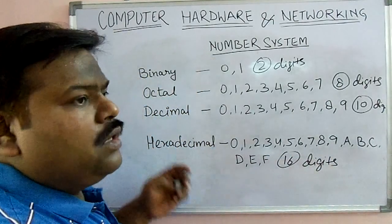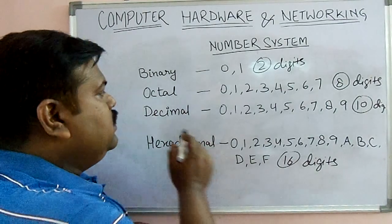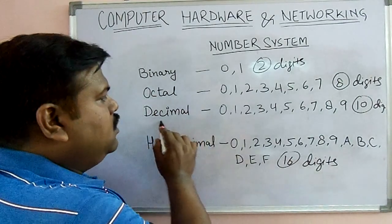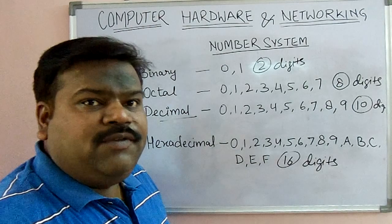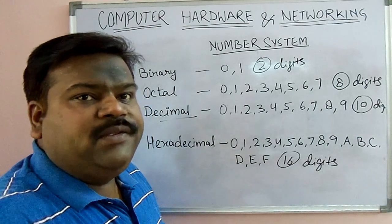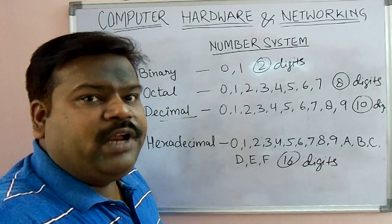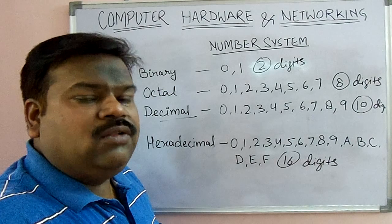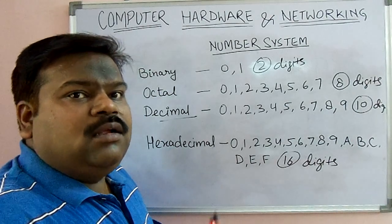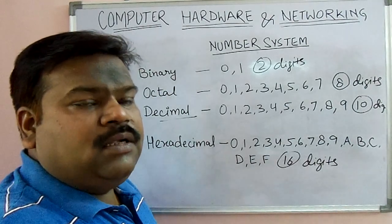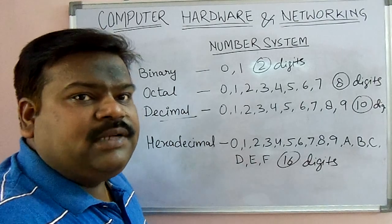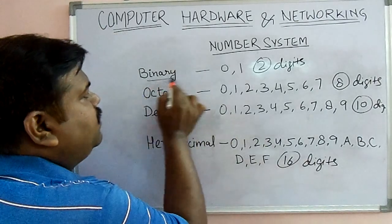So in day-to-day life we use decimal number system. Like we say hundred rupees or fifty kilograms. These are all decimal number system. But our computer understands binary number system.